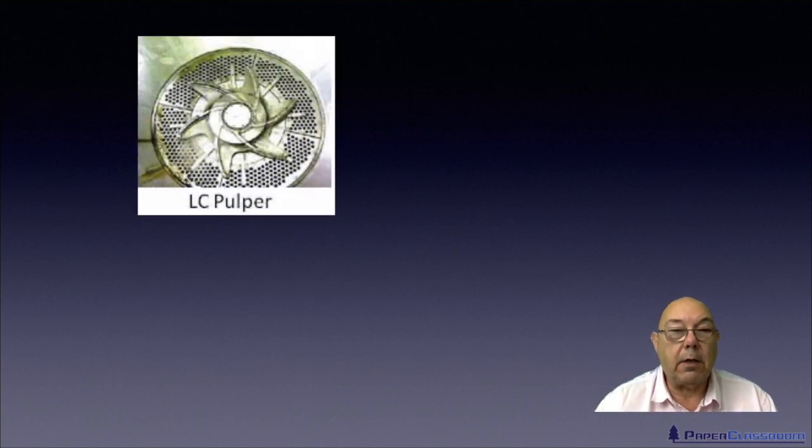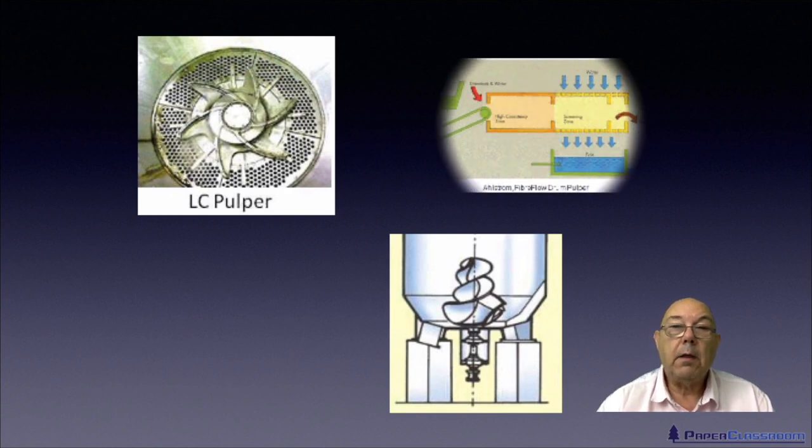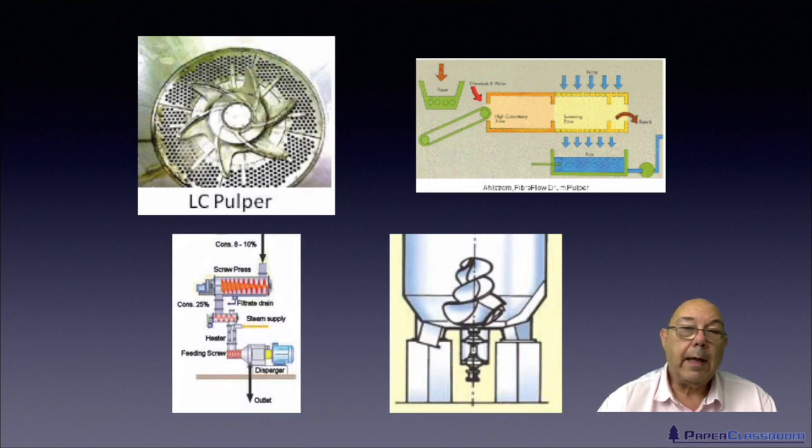For fiber dispersion, we'll be looking at things like low consistency pulpers, high consistency pulpers, drum pulpers, and of course not just pulpers but also dispersers. Dispersers are interesting because they do not remove contamination from the system but they do break them up and make them so small that they can't be seen.